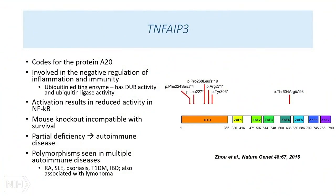TNFAIP3 codes for a protein called A20, which is involved in deubiquitinization — Dr. Kastner told us about the importance of those proteins this morning. It has two different roles in the deubiquitinization process. If you have a complete knockout of this gene in a mouse, it's lethal. So the disease is thought to result from haploinsufficiency: one mutation leads to dysregulation caused by the protein, leading to changes in ability to control NF-κB.